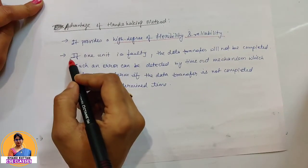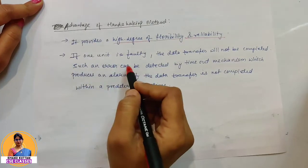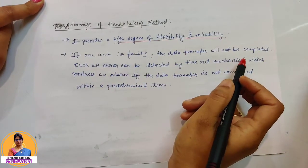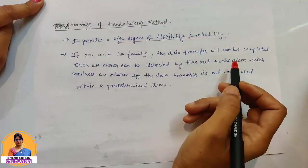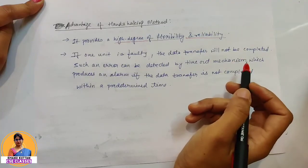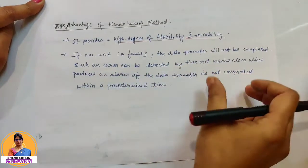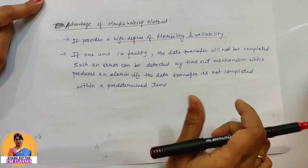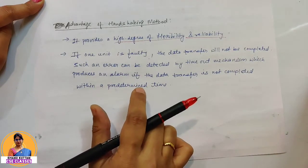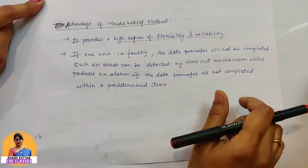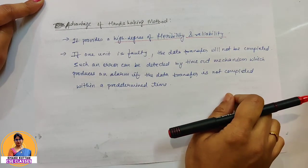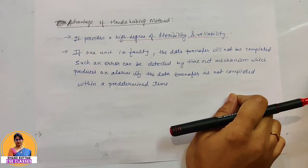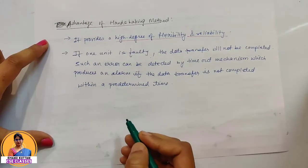Another advantage is that if one unit is faulty, the data transfer will not be completed. To detect this, we put a time-out mechanism with a pre-determined time limit. If the data is not received within that time, an alarm will be triggered so we will know there is an issue with one unit.